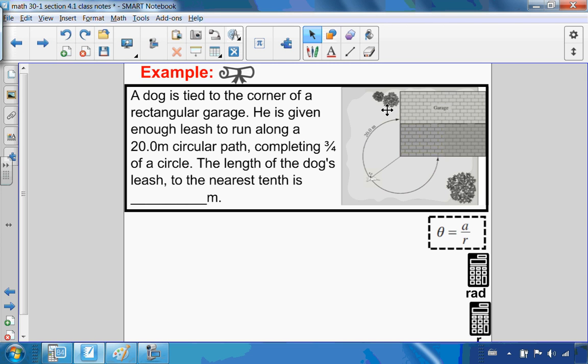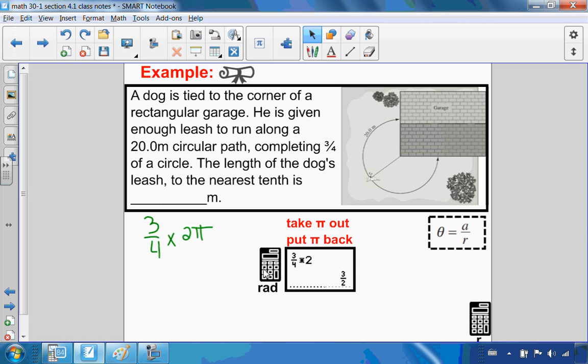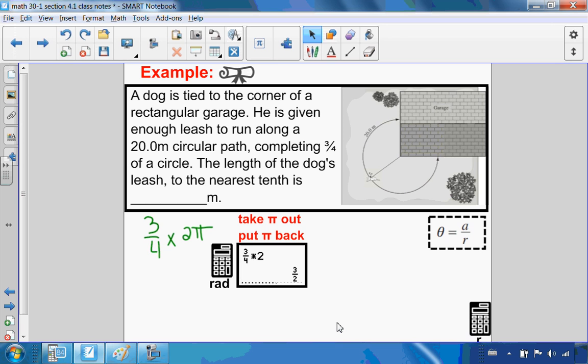Three-quarters of the circle, let's figure out what angle that is. Three-quarters of a circle, a full circle is 2π. If I want to know three-quarters multiplied by 2π, I know that my central angle is 3π over 2. The circular path that he runs along is 20 meters. That's my arc length.